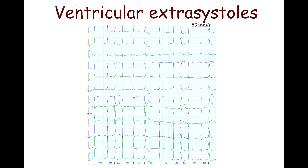Ventricular extrasystole may appear at any moment of the cardiac cycle, even after the P-wave. Such a ventricular extrasystole must be late. The ectopic ventricular impulse appears earlier than the impulse of sinus origin is conducted to the ventricles through the atrioventricular node. The PR interval before the ventricular extrasystole is shorter than usual because the ventricular extrasystole appears after atrial depolarization but before the sinus impulse is conducted through the atrioventricular node.